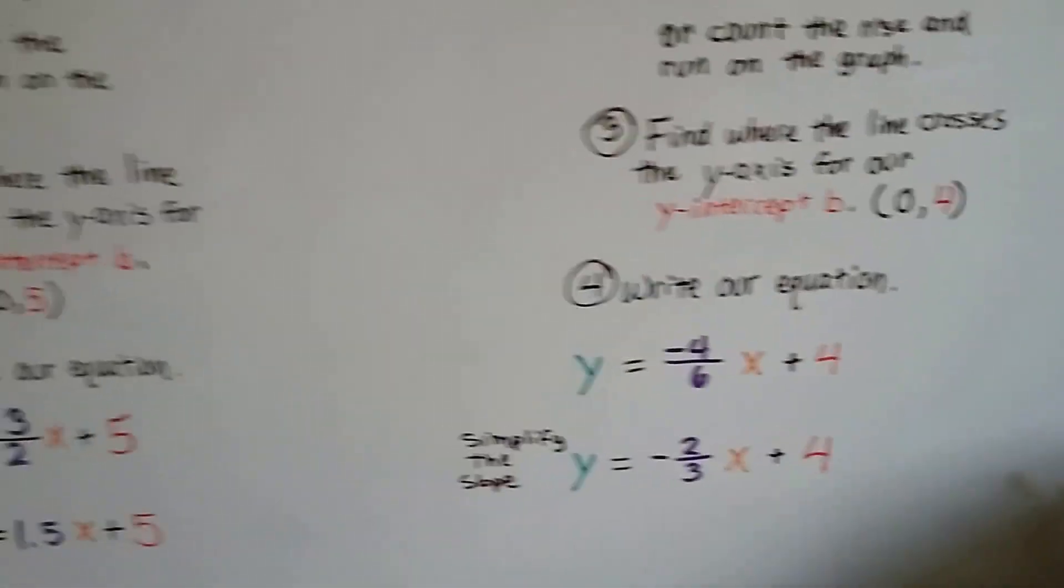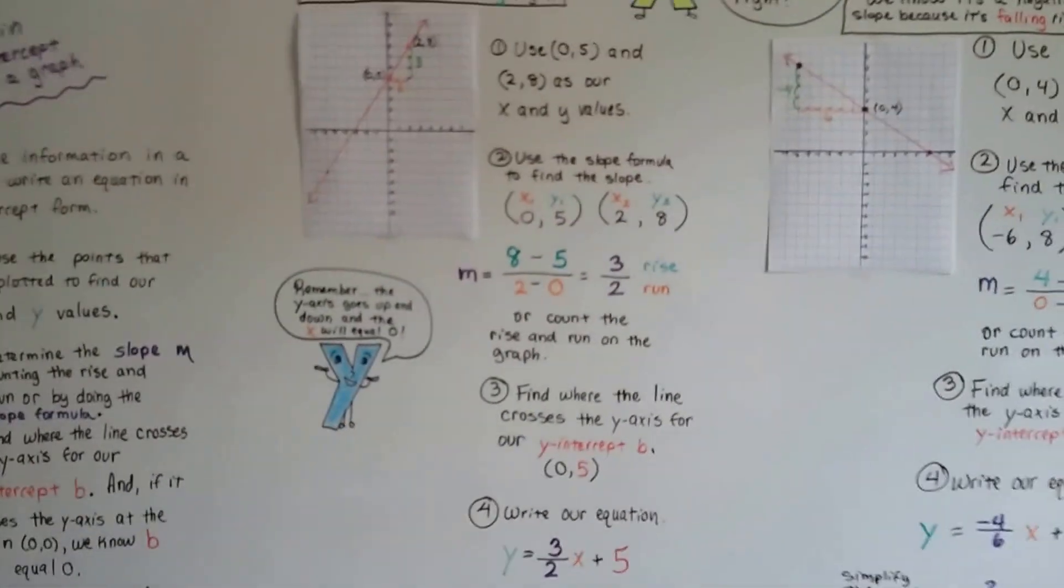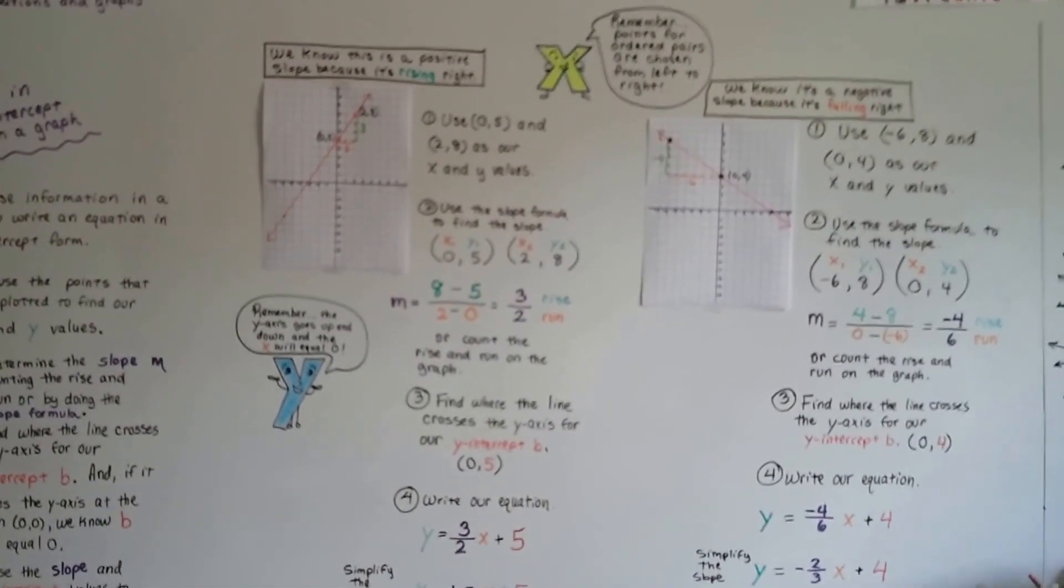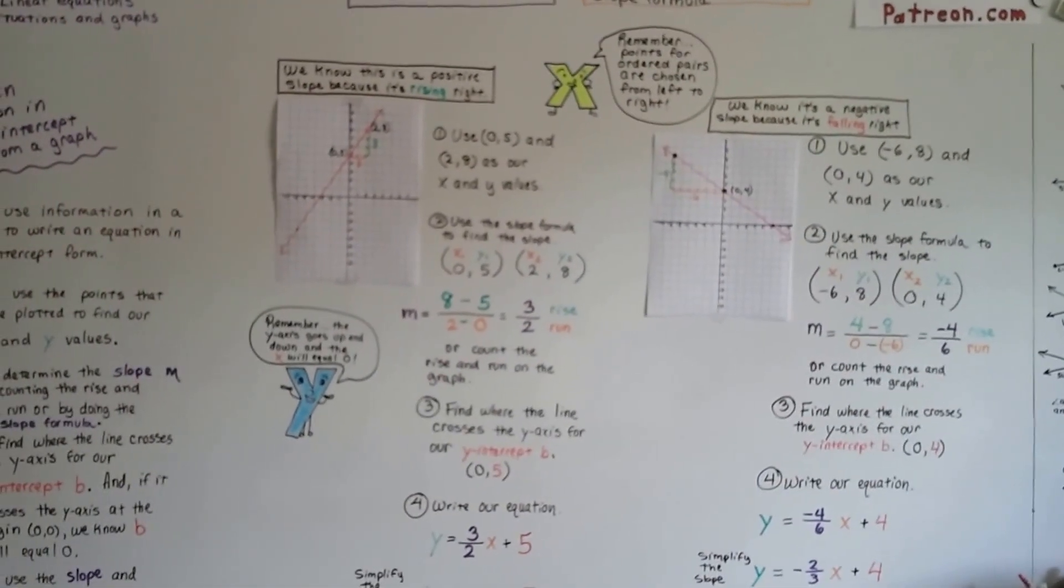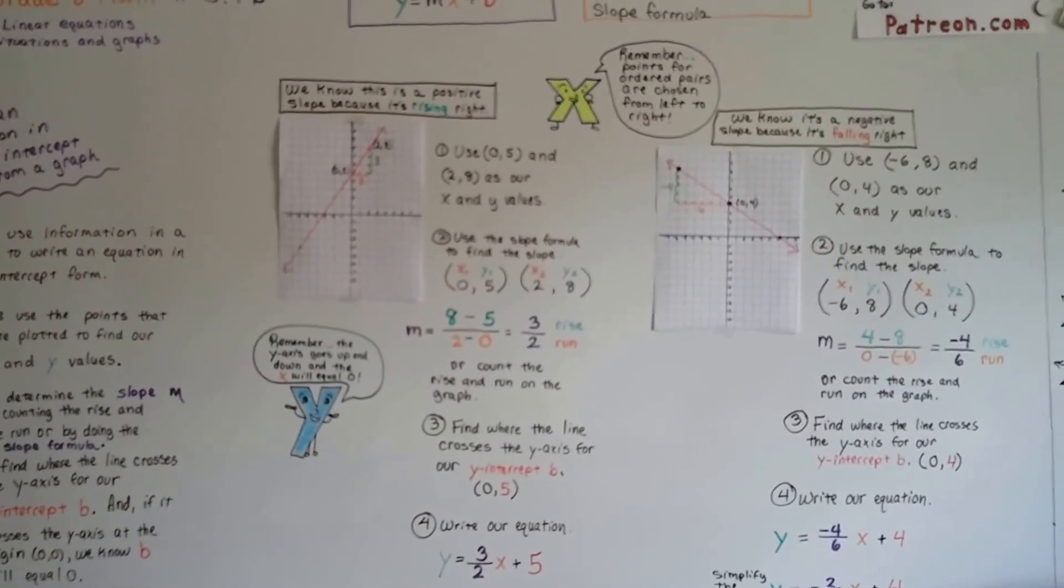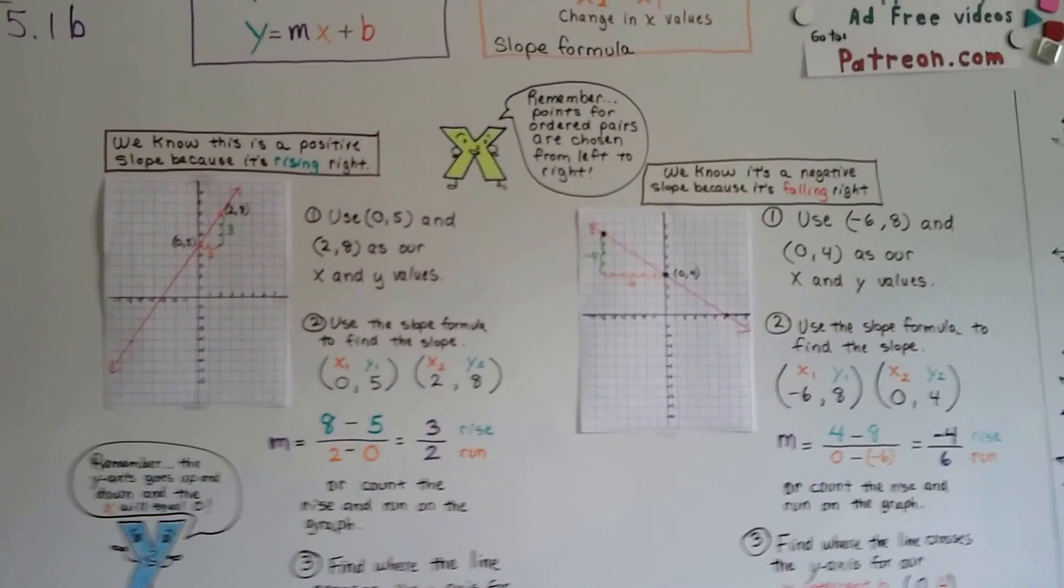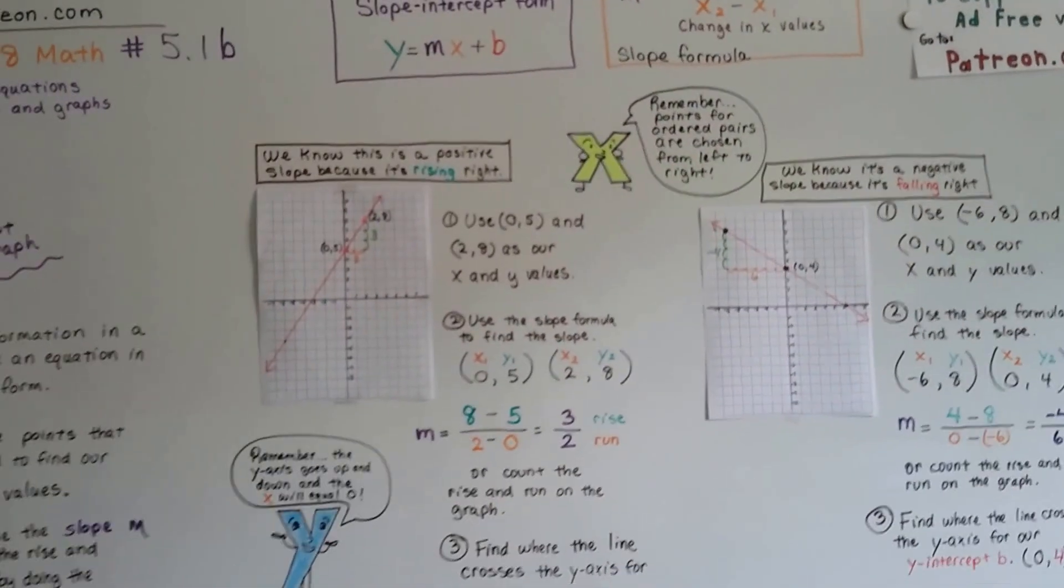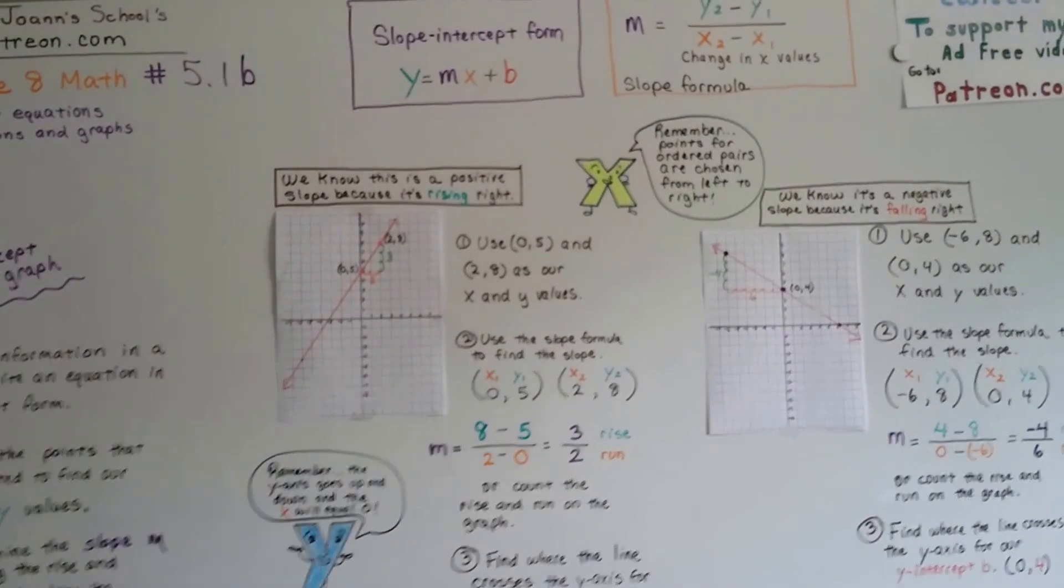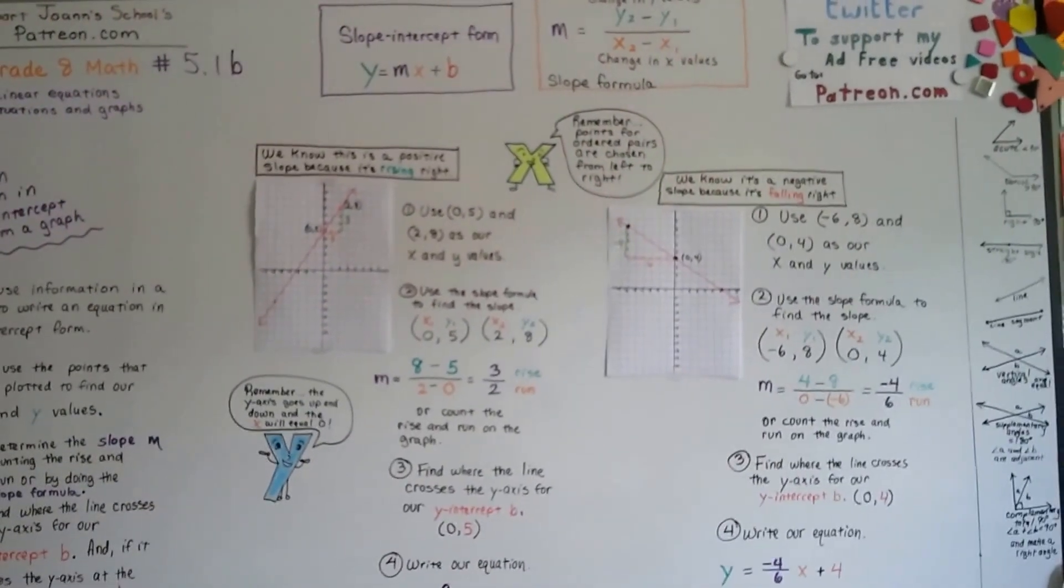And there, we wrote equations from a graph, from the information on a graph. Does that make sense? With all the videos that we've done in the past, this should have been kind of easy. We're going to continue on and we're going to keep talking about writing equations in slope-intercept form. So, I'm going to try doing it from a description. I'll see you next video.